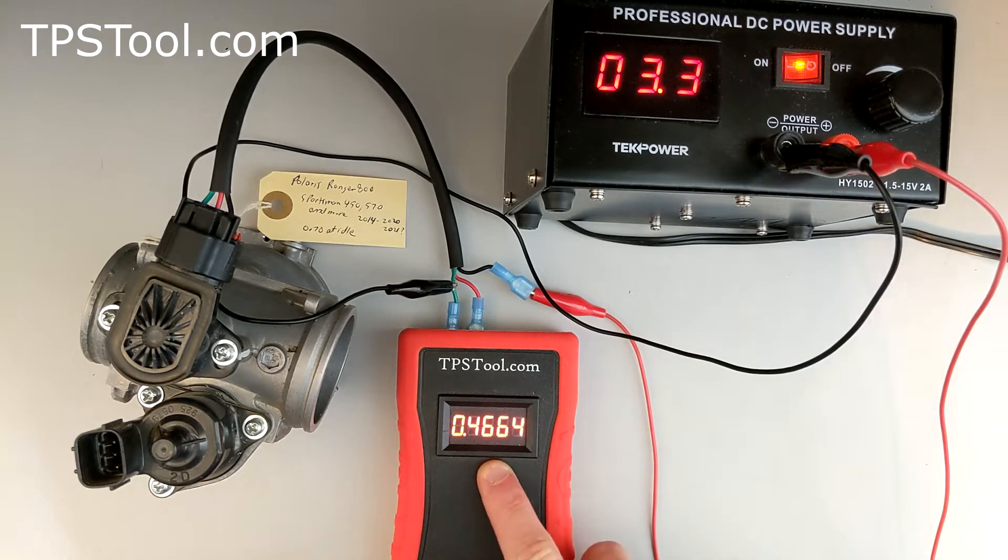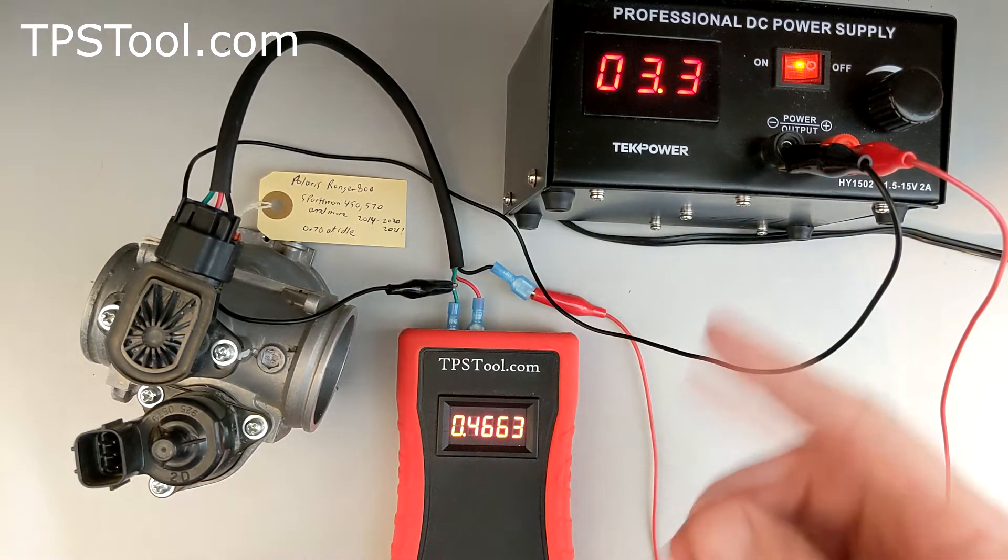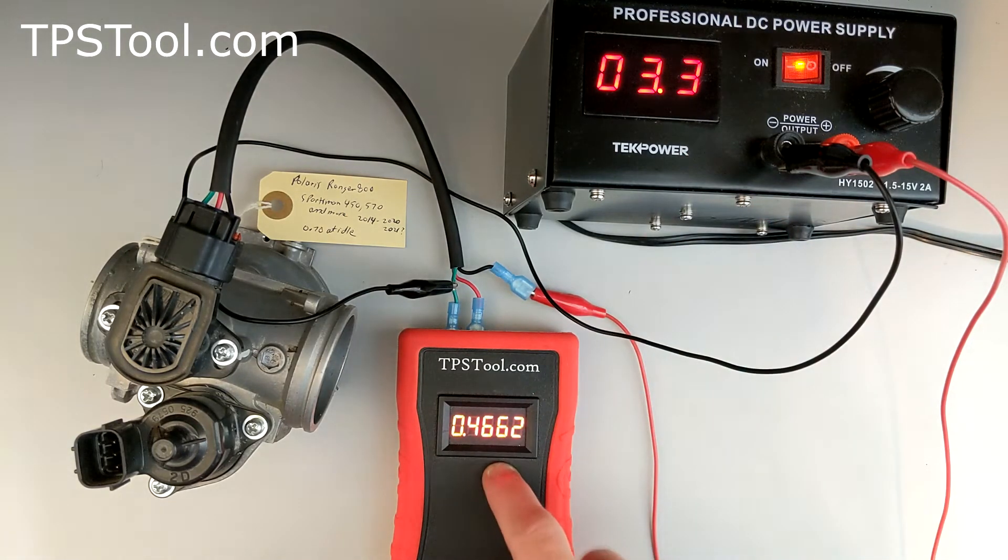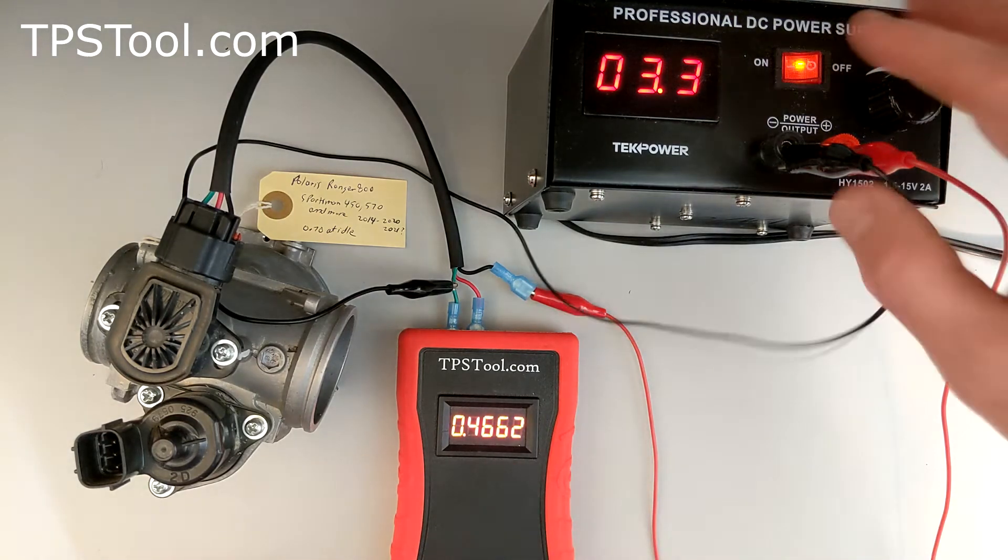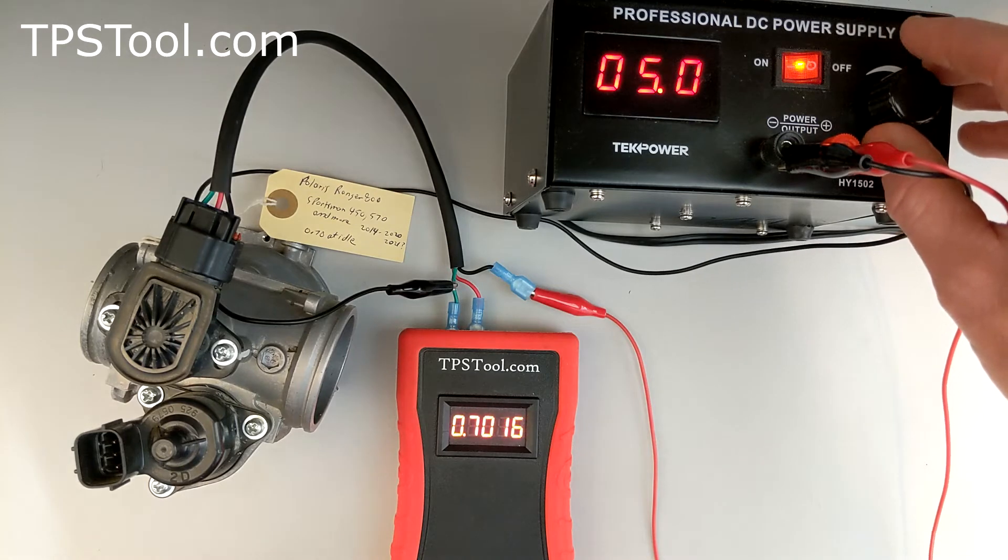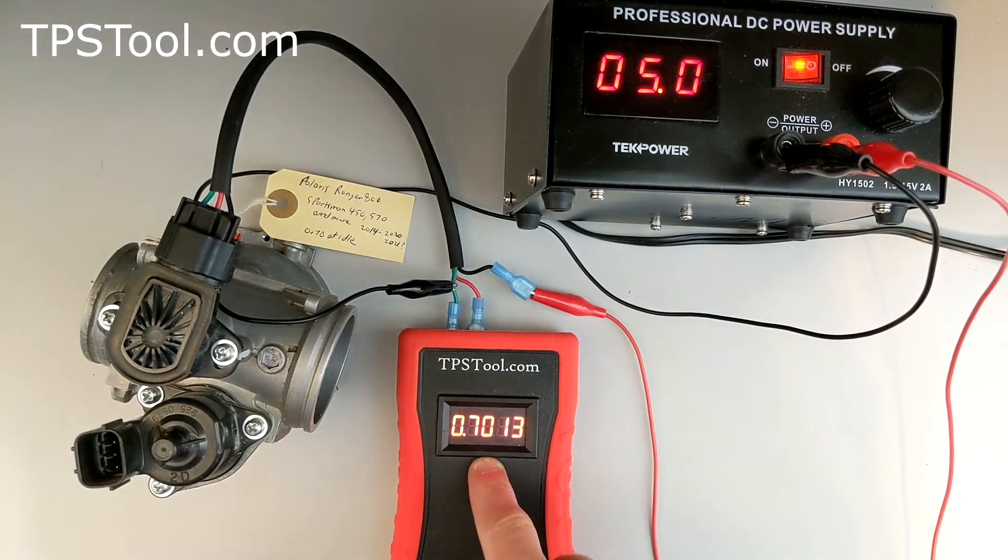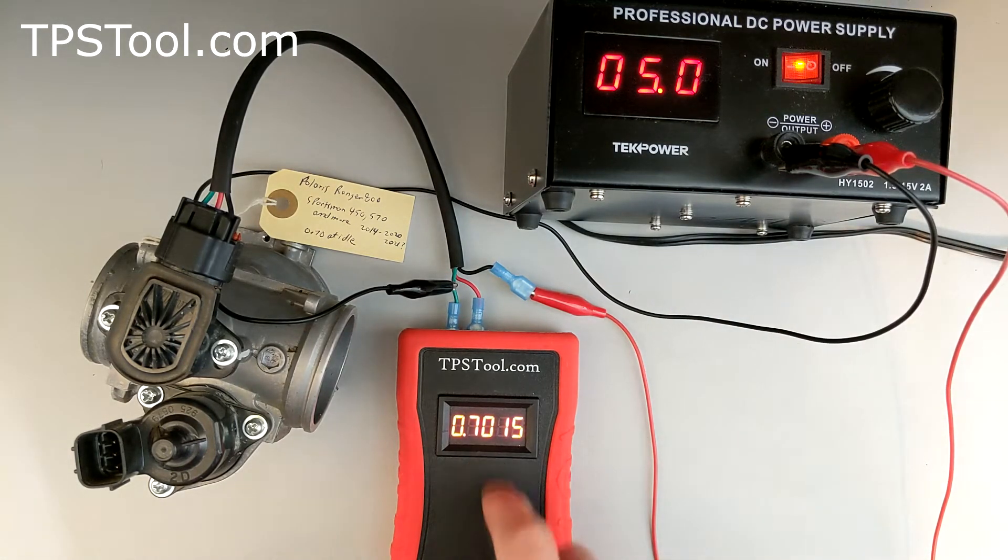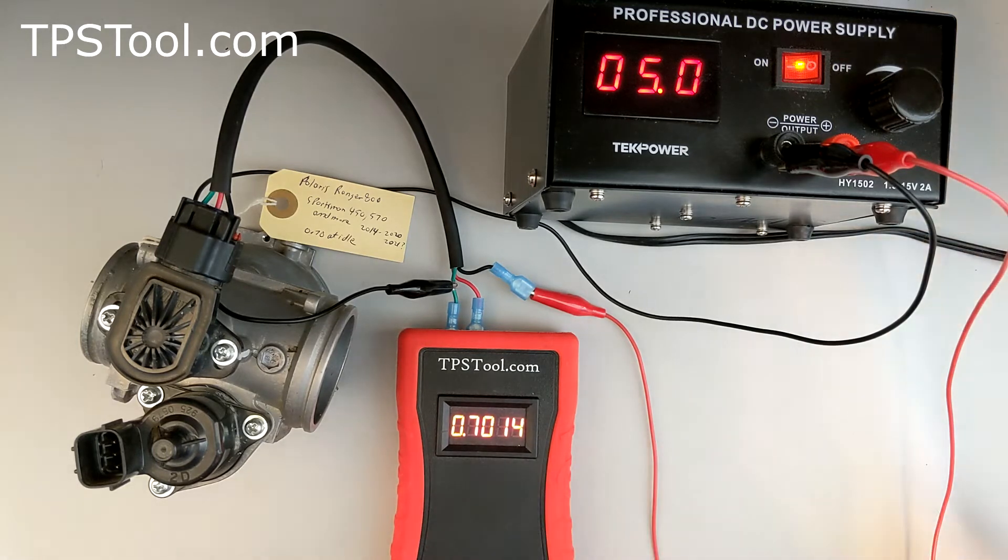So, I'll go down to 3.3-volt input, and there you go. 0.46. So, again, using a 3.3-volt tool such as Polaris Digital Wrench, 3.3 volts in, you're going to get 0.46 out. That's proper setting. Using a 5-volt tool, go back to 5 volts. 5 volts in, and you should get 0.70 out. So, a 5-volt tool would be such as this TPSTool.com pro-powered meter.